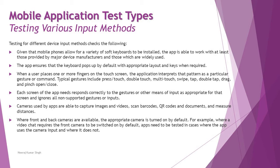Moving to the next topic: testing various input methods, which refers to how a user can interact with the mobile app within a particular device. When testing different device input methods, we check several factors. Given that mobile phones allow a variety of soft keyboards to be installed, the app should work with at least those provided by major device manufacturers and those which are widely used.